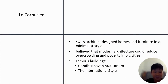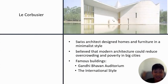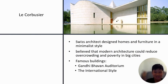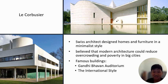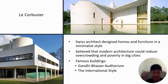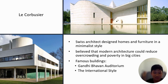Le Corbusier is a Swiss architect who designed homes and furniture in a minimalist style. He believed that modern architecture could reduce overcrowding and poverty in big cities. A famous building he's known for is the Gandhi Bhavan Auditorium, built in the international style.